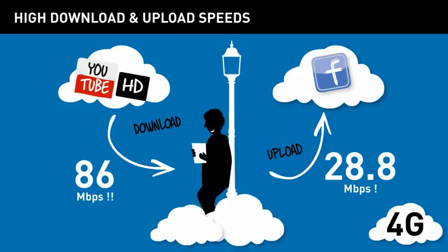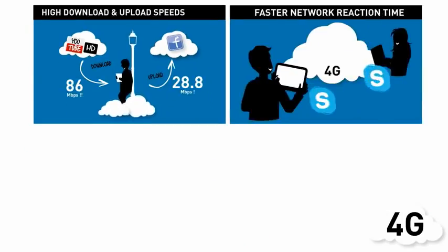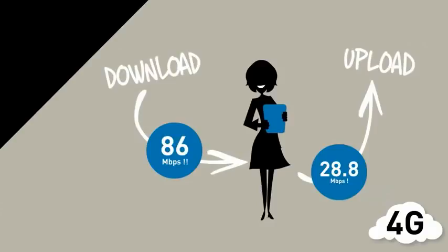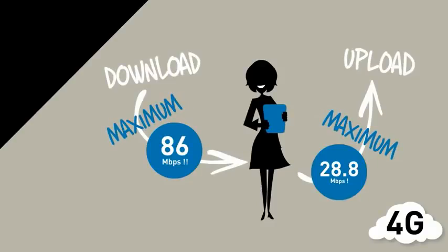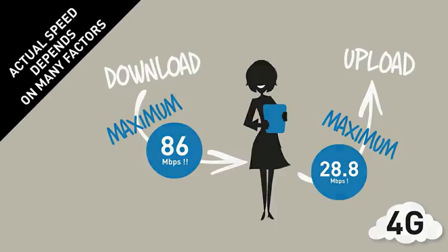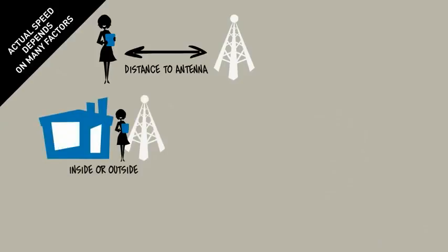And 28.8 megabits per second for uploads. The 4G network also offers faster network reaction times due to lower latency and much more stable connections, even in low coverage areas. Note that we said up to 86 megabits per second — that's the theoretical maximum speed.